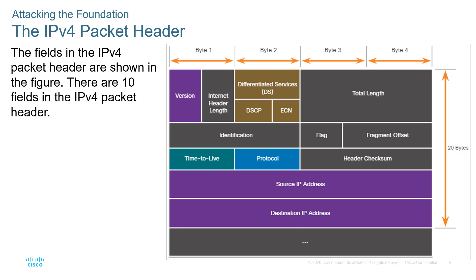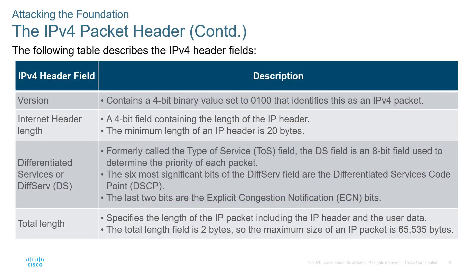Keep in mind as we look at this: the header is about 20 bytes long, source and destination are 32 bits each, and there are 10 main fields. The key ones we need to understand are: version, DSCP, ECN, TTL, protocol, source, and destination. Version is a 4-bit binary number that determines which layer 3 version we're dealing with — IPv4 or IPv6.